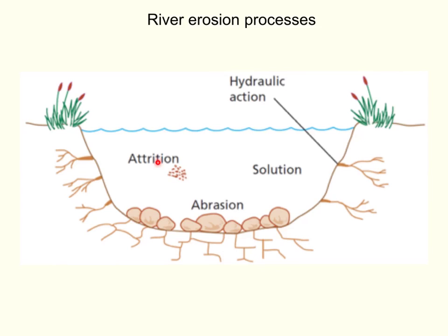Our third one is attrition. You can see at the bottom of this diagram quite a few of these rocks and stones — they're quite rounded. That might be because the rocks themselves have been subject to attrition, which is the process where the stones themselves roll against the banks of the river, the bed of the river, and against each other, and therefore they become rounded and they become smaller. So attrition is a process that works on the actual sediment and not the actual banks or the bed of the river itself.